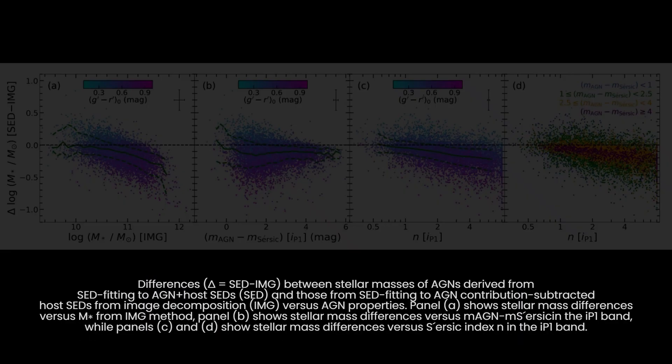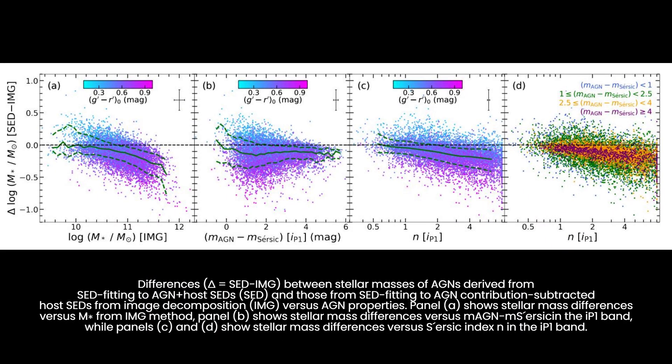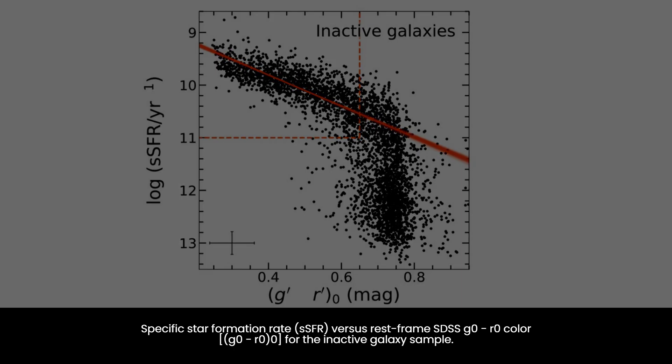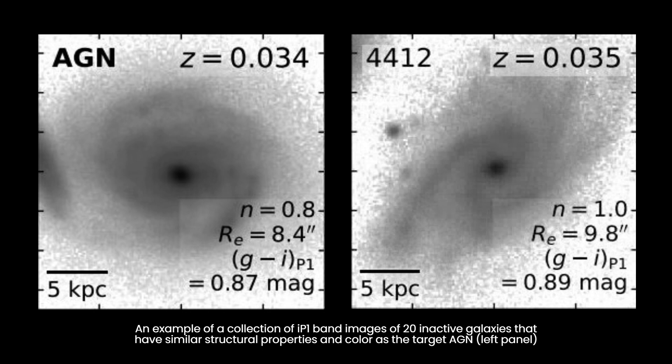Radiative mode AGN feedback, which typically suppresses star formation, appeared to be less effective for galaxies below the cosmic scaling relation. Meanwhile, galaxies above this relation seemed impervious to the efforts of kinetic mode feedback, persisting in their enduring star-forming endeavors.